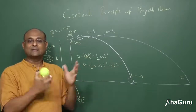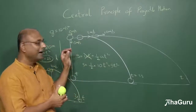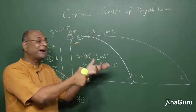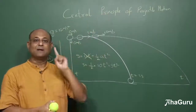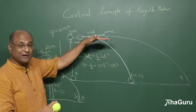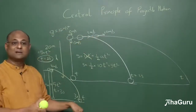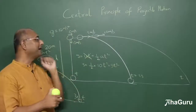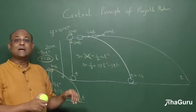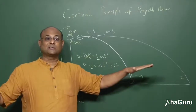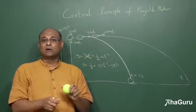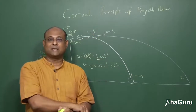Now let us look at the second part of the central principle — again something Galileo came up with. This is a very useful and interesting idea. The first part was that horizontal velocity does not affect vertical motion. The second part is that the fact you are moving vertically does not affect horizontal velocity. Let us look at that principle carefully.